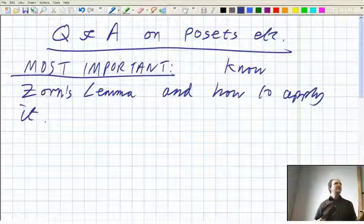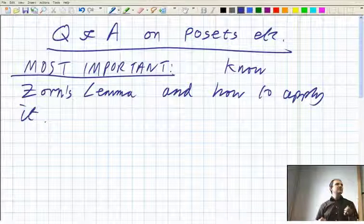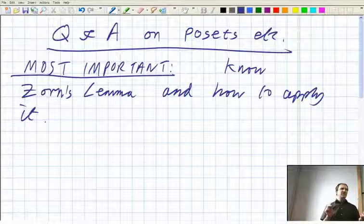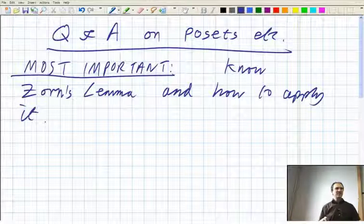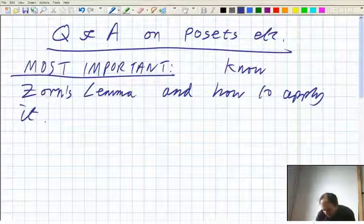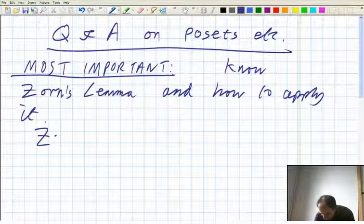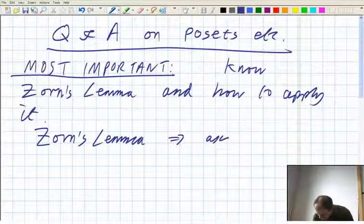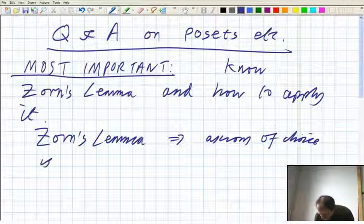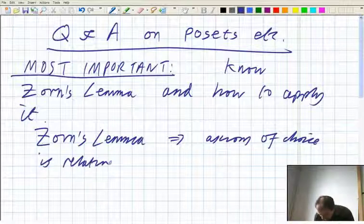So, what in Rudin's real and complex analysis, he uses the axiom of choice to prove the Hausdorff-Maximality theorem. Hausdorff-Maximality theorem is easily equivalent to Zorn's lemma. That's relatively easy, as long as you get around the notational and terminology issues. So, Zorn's lemma implies axiom of choice is relatively easy. See question sheet.